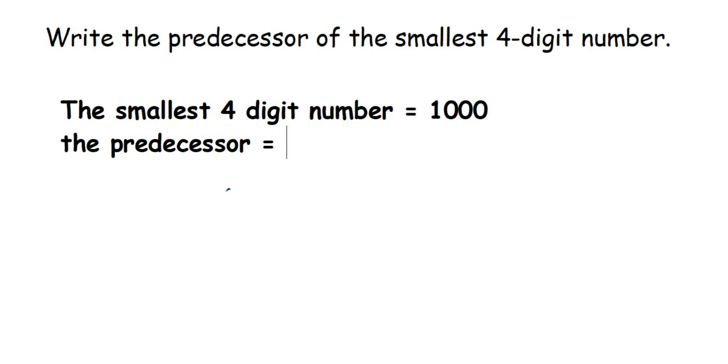So you subtract one from one thousand: 1000 - 1 = 999. I hope you know how to subtract; I'm not showing you because you would have learned this in your lower classes. So the predecessor of 1000 is 999.